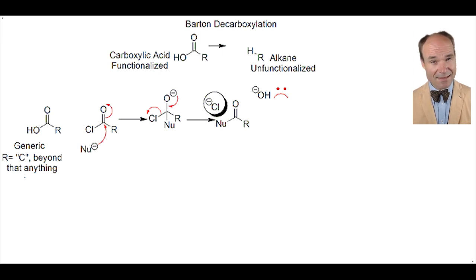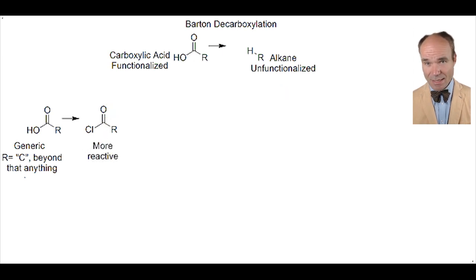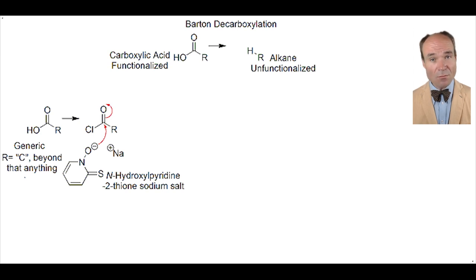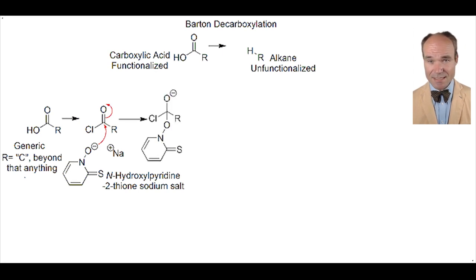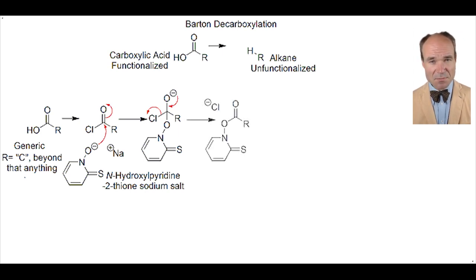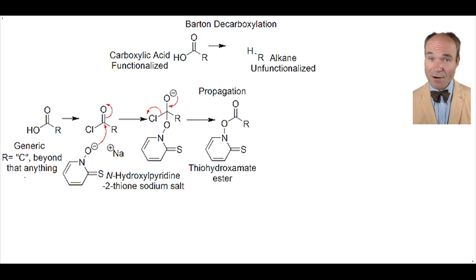So to get this extra reactivity, we convert the carboxylic acid into the related acid chloride. Then we use the sodium salt of N-hydroxypyridine-2-thione as a nucleophile, which attacks the carbonyl carbon of the acid chloride, breaking the carbonyl double bond in the addition step to provide the tetrahedral intermediate. Then the carbonyl is reformed with the negatively charged oxygen, and the chloride ion leaves in the elimination step. This provides a thiohydroxamate ester.